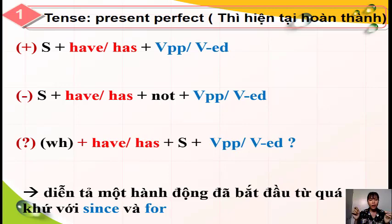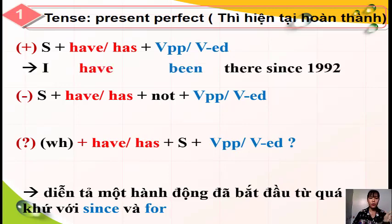Còn đối với 'for', chúng ta cộng cho một khoảng thời gian kéo dài. Ví dụ: for 2 weeks, for 3 years - trong 2 tuần, trong 3 năm. Câu ví dụ thể khẳng định: chủ từ số nhiều sử dụng 'have', và phân từ 2 của 'be' là 'been'. Nhìn '1992' - đó là một mốc thời gian, một điểm thời gian, cho nên cô sẽ sử dụng 'since'.